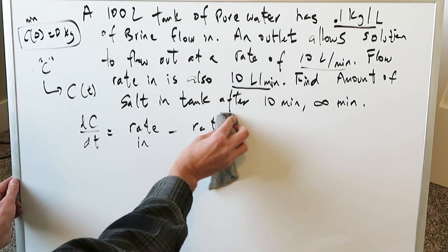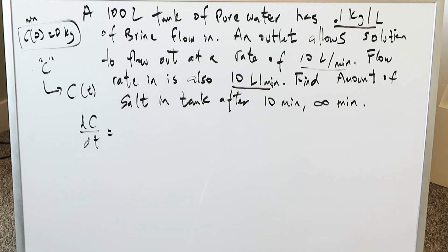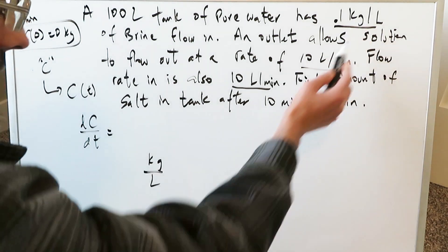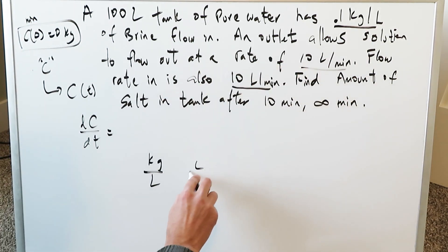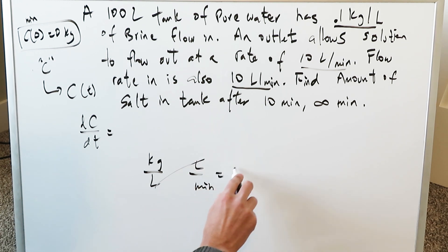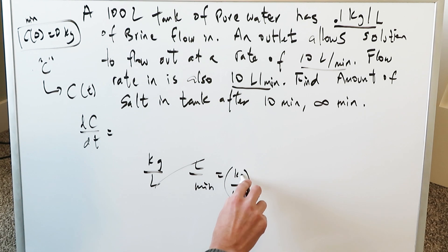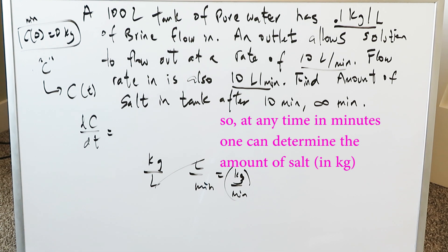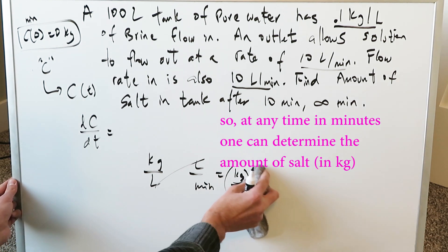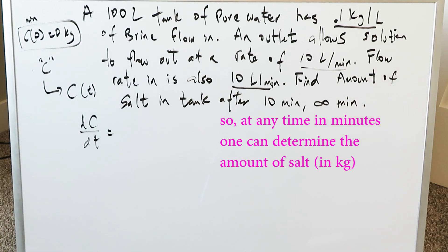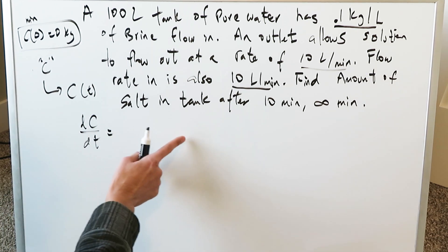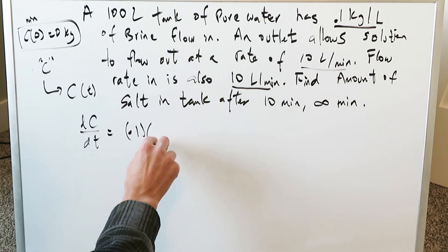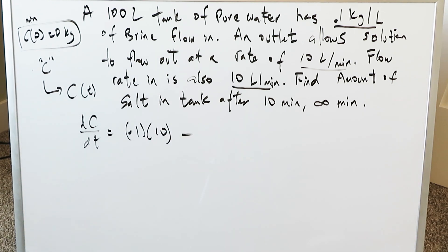We have the format but we have to build the equation. Think about concentration in terms of kilograms per liter and flow rate in terms of liters per minute — the liters cancel and you get kilograms per minute, which is what rate in and rate out should always be in. What's our rate in? What's coming into this tank? We have 0.1 kg/L of concentrated brine at a flow rate of 10 liters per minute.